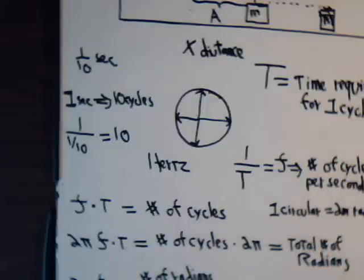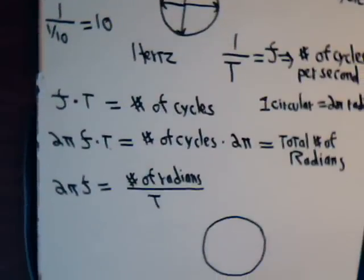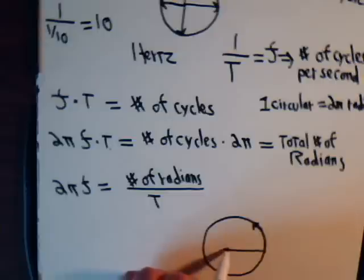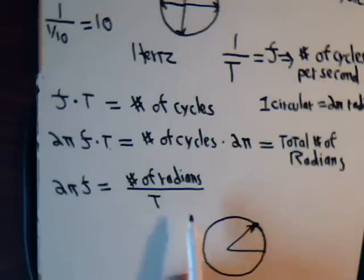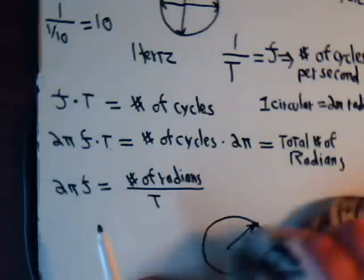The number of radians per unit of time — radians, of course, is an angular measurement. So if we're going around a circle and referring to the number of radians per unit of time, what we're talking about is how fast we're going about this circle. Going one-third of a radian per second versus one-half of a radian per second — clearly, one-half of a radian per second is faster. So this is angular velocity.